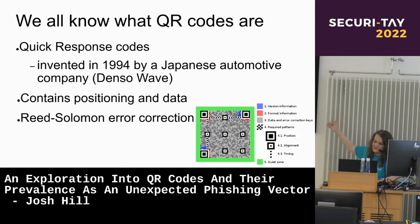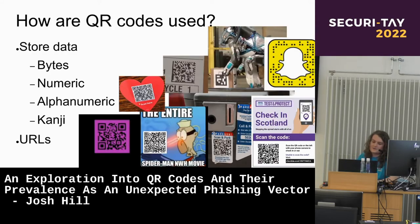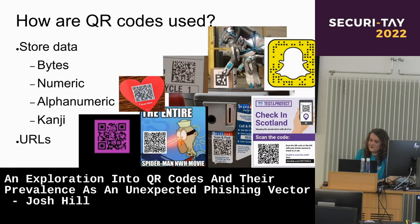So this is how it works. It contains a few positioning squares and a bunch of data, and it's also got some complicated error correction maths. So you can technically cover half of the QR code and it still works. Most of the time they store data — bytes or bits, numeric or alphanumeric data, and they can also store kanji — which usually just gets used to store URLs to point to some website.